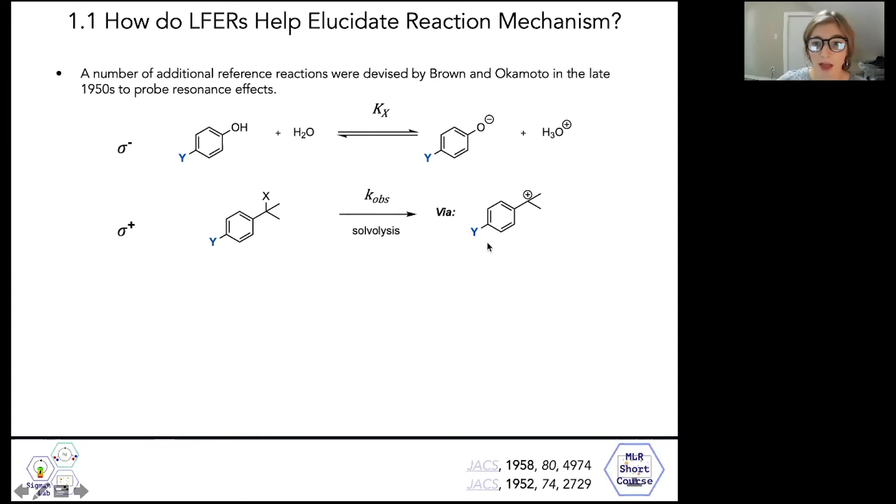Sigma minus values were calculated based on the observed acid base equilibria of substituted phenols, while sigma plus was calculated from the observed solvolysis rates of substituted isopropyl benzene derivatives, which proceed through a tertiary benzylic cation intermediate. The charges that develop over the course of these reactions interact with the delocalized electrons in the aryl pi cloud, and therefore the associated parameters measure resonance effects.